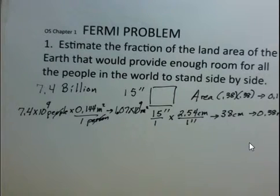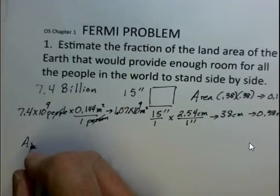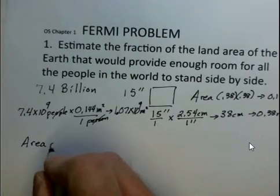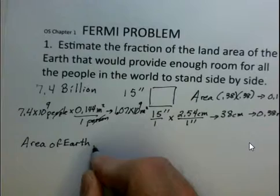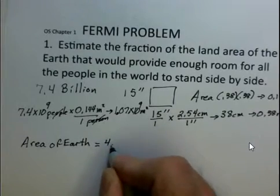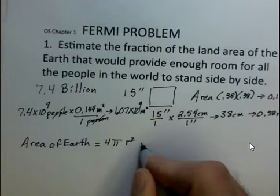Another number we need is how much area of land is there for the Earth. We don't want them standing in the water. What is the fraction of the land area is our question. So we have to figure out how much land area there is. Well, the area of the Earth, Earth is pretty much a sphere. So that would be calculated with 4πr². And you can look up the radius of the Earth.